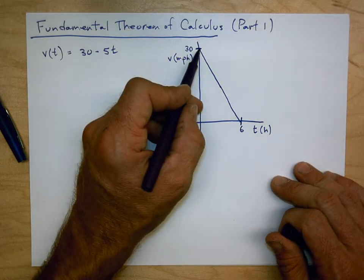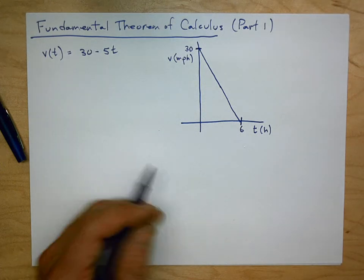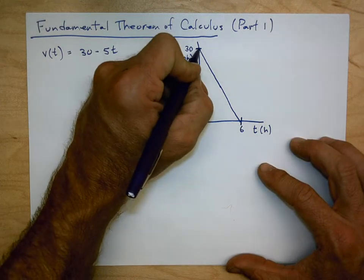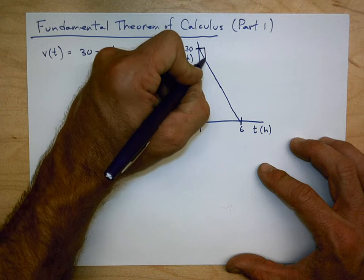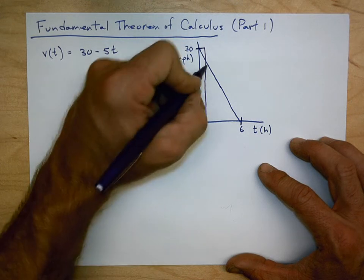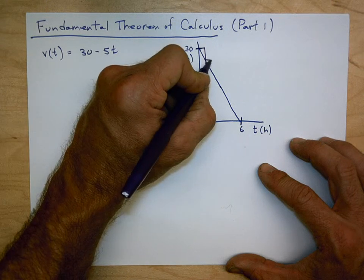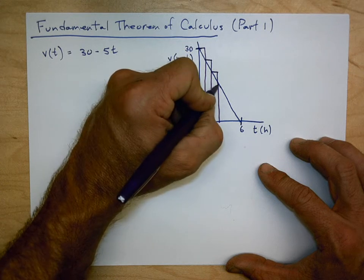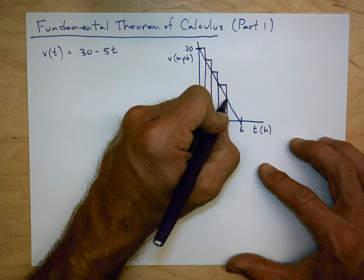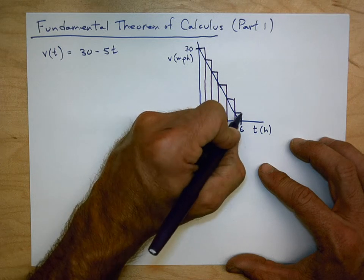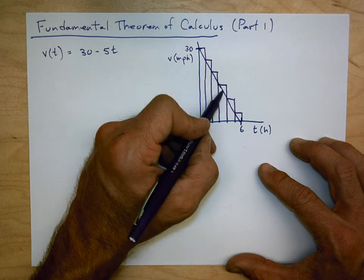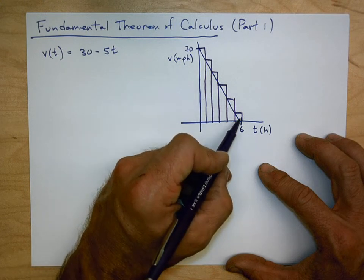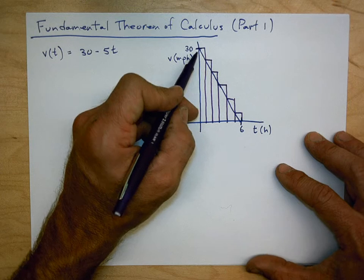Using the approximating rectangles we've been studying, one way to think about this is: I can approximate by taking 30 miles per hour for one hour, then after one hour I'm down to 25 miles per hour for an hour, then 20, then 15, then 10, then 5. This will be an over-approximation, so we'd have 30 + 25 + 20 + 15 + 10 + 5 as a rough approximation of how far we've traveled.